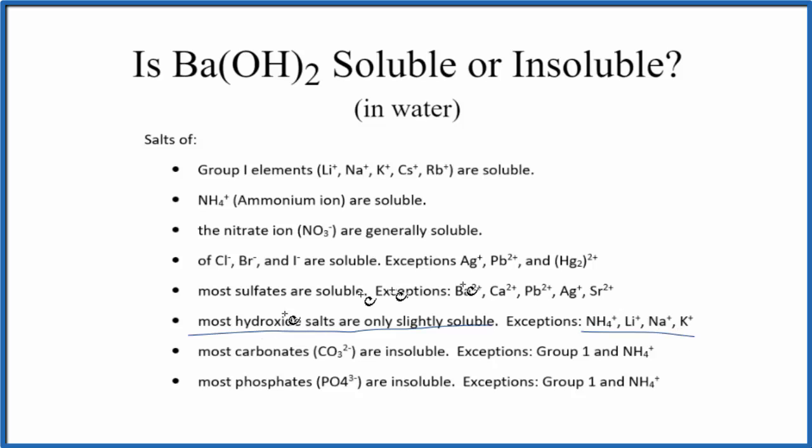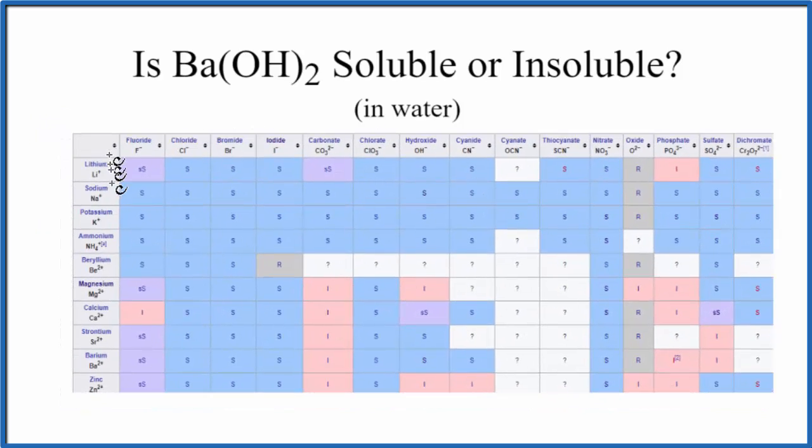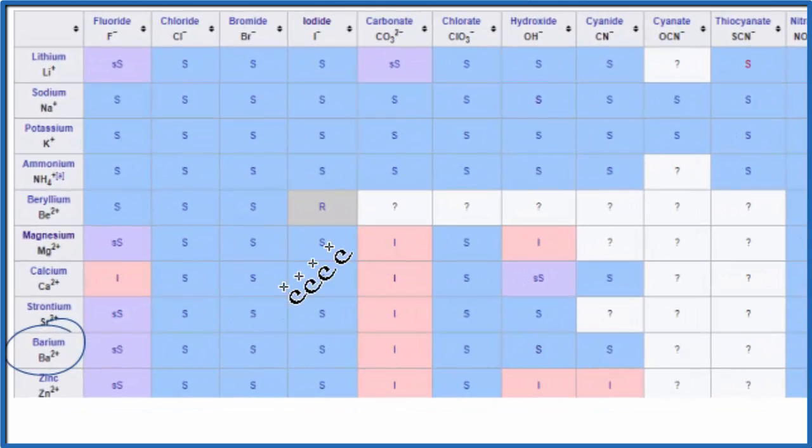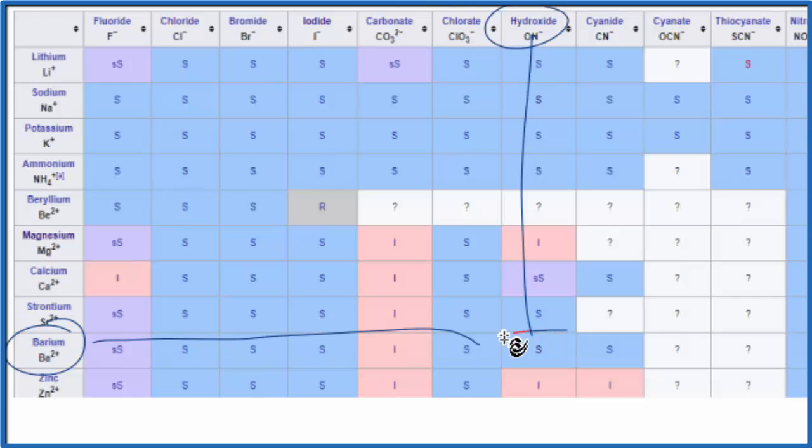So according to these rules, it's only slightly soluble. But if we were to consult a solubility chart, we find barium right here and hydroxide right here. So we go over and down, we see an S. That means soluble. So we have two answers here, slightly soluble and soluble.